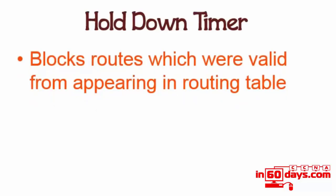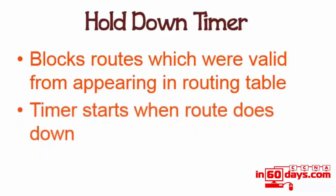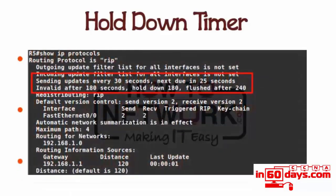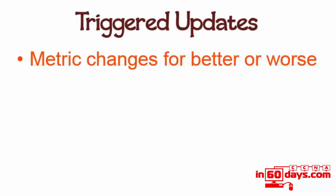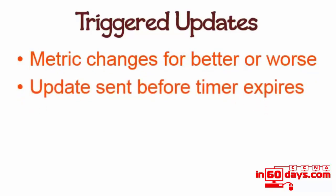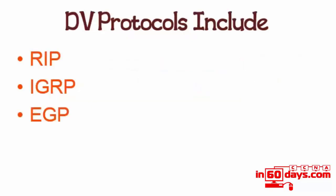Hold-down timers block routes which were valid from appearing in the routing table. If there's a problem with network instability, the hold-down timer as it counts should allow the route to stabilize. The hold-down timer for RIP is 180 seconds. Triggered updates: when the metric for a particular route changes for better or worse, the update is sent before the timer expires. This allows our routing table to have a fresher route - if we wait until 30 seconds, we could have up to 30 seconds of packets going into black holes or suboptimal routing.